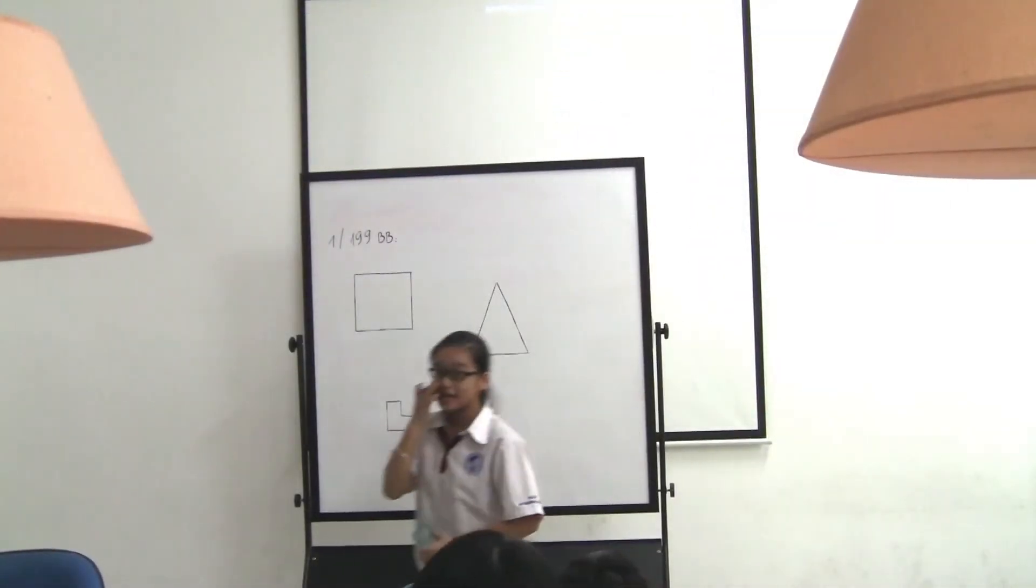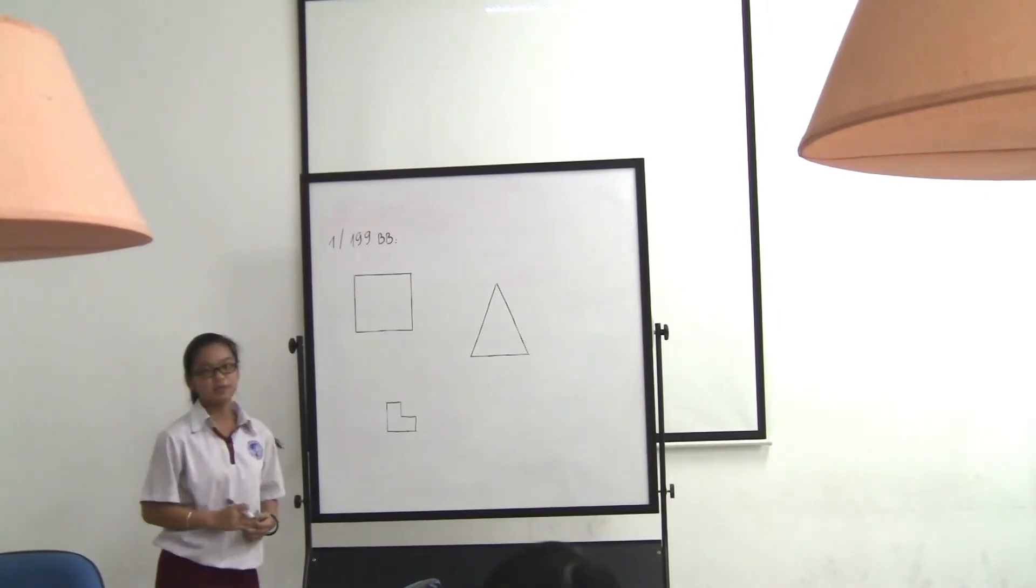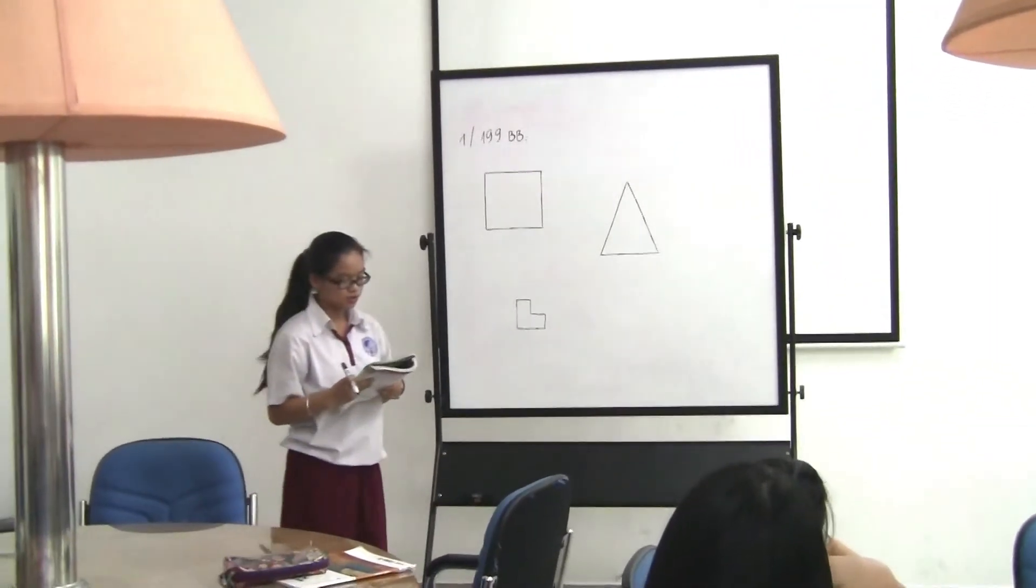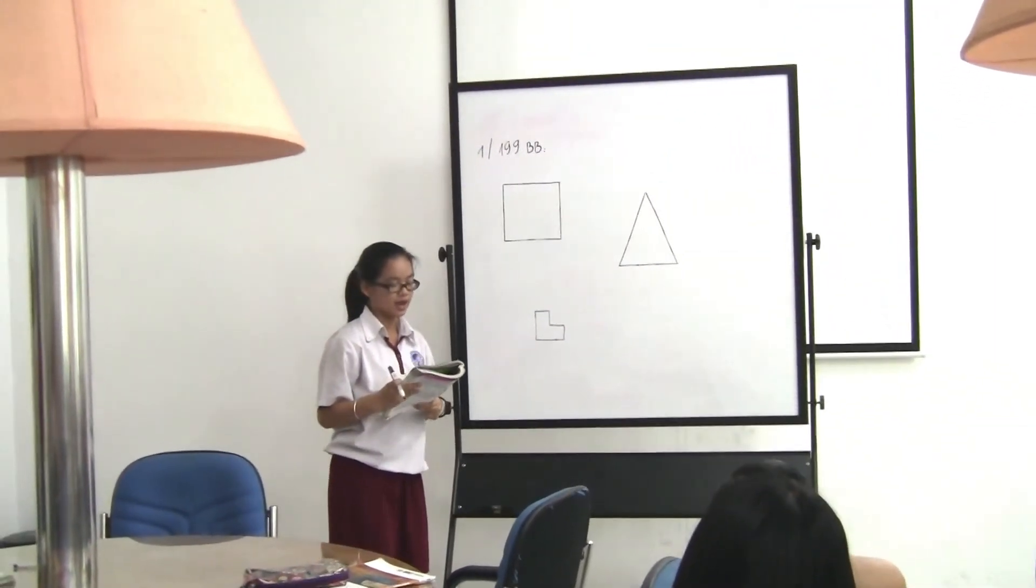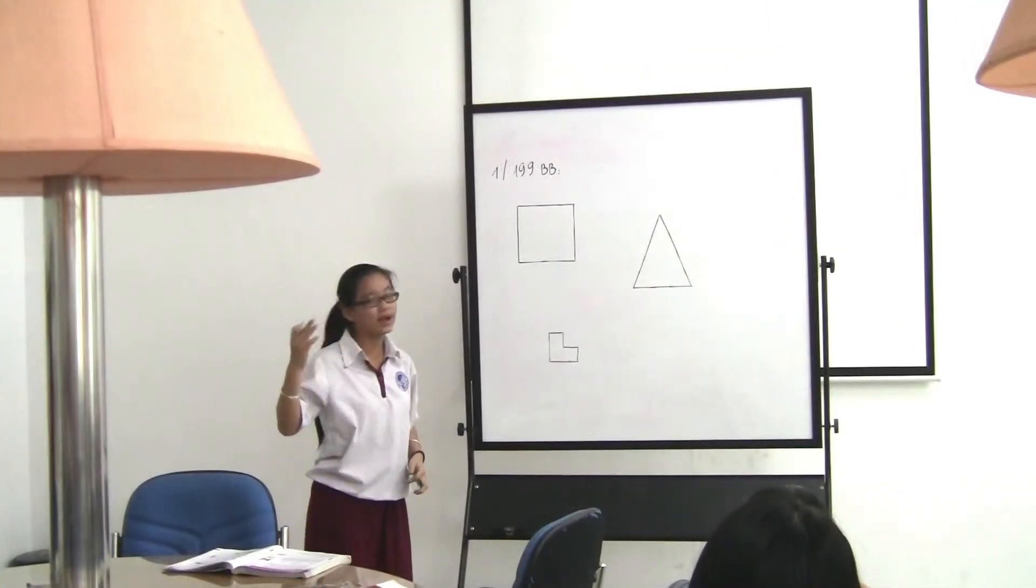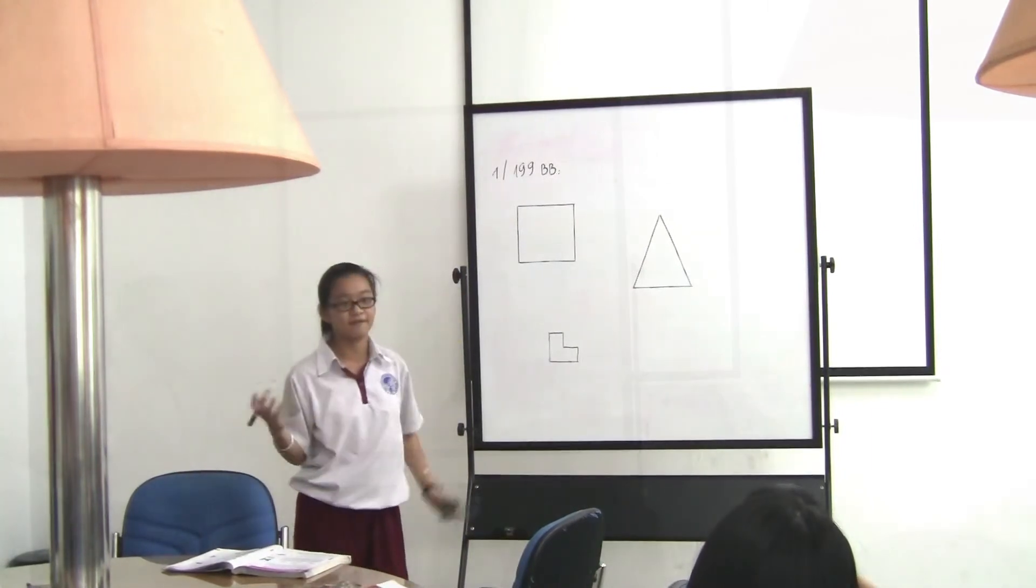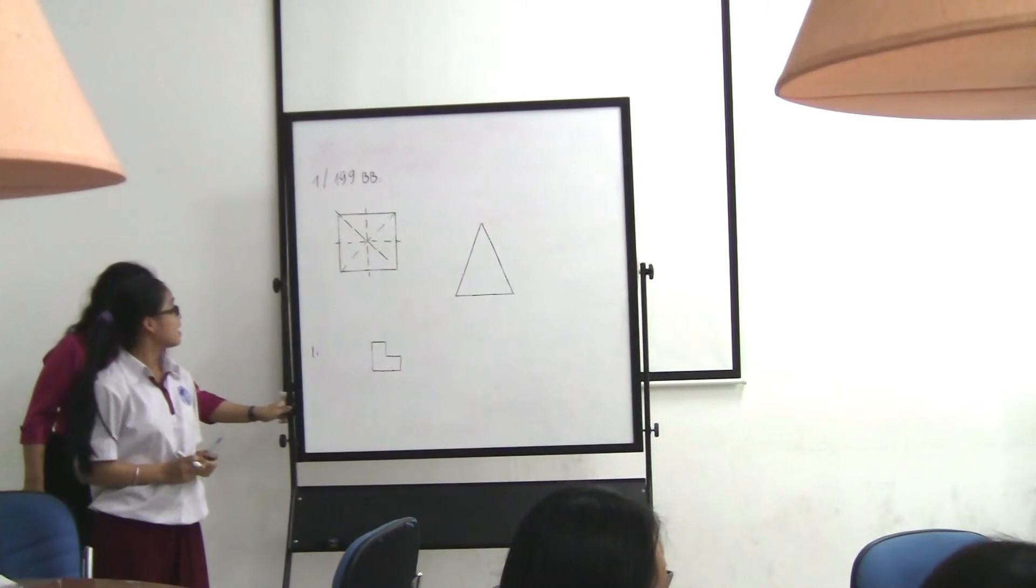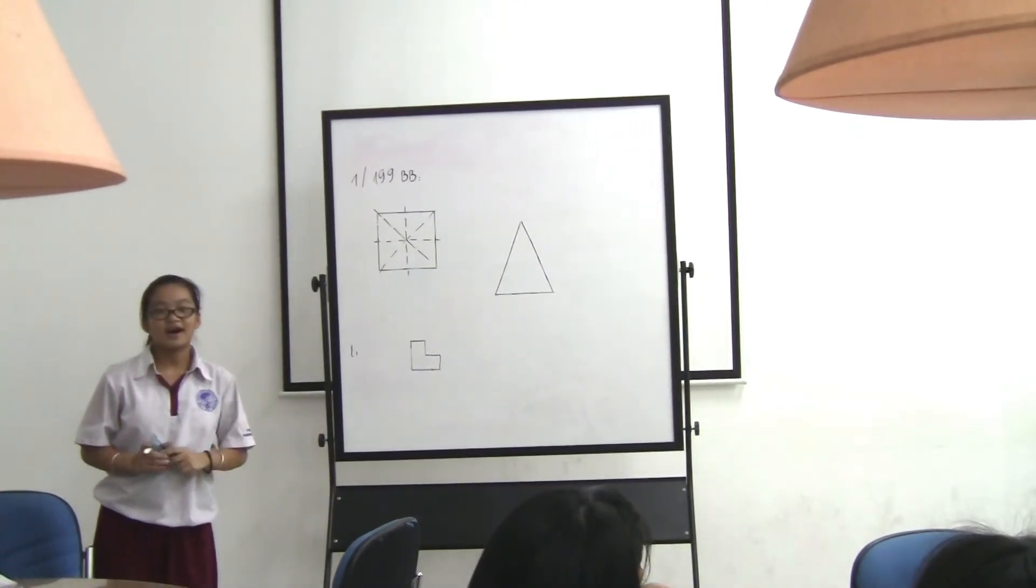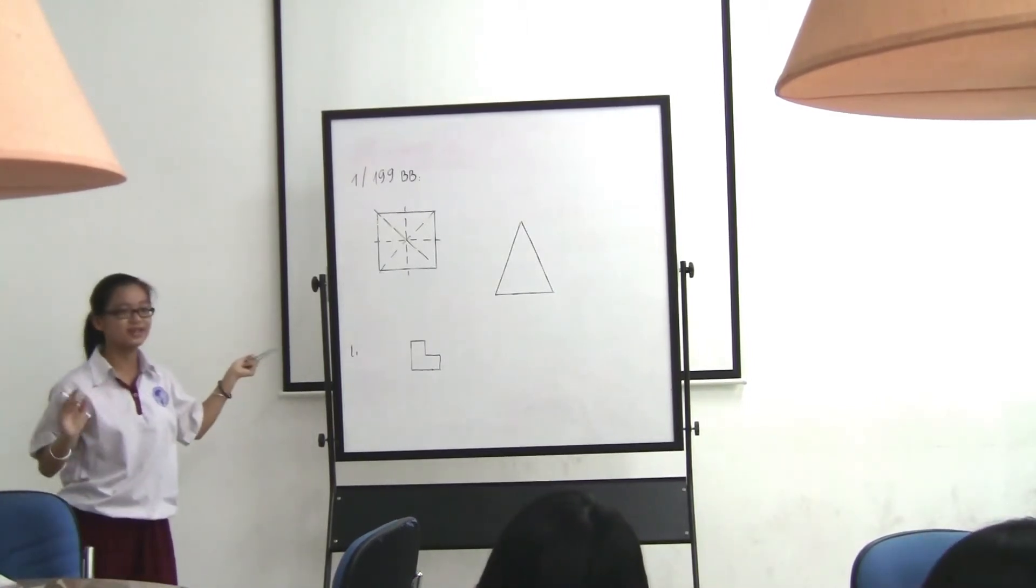You can see in exercise one on page 199, the first picture is a square. They asked to draw the line symmetry. I would like to draw the symmetry lines. How many symmetry lines would you think this square has? For example, we have two more shapes.